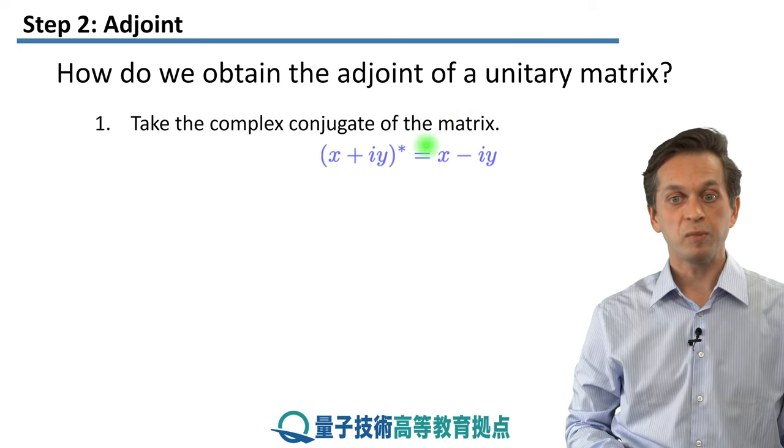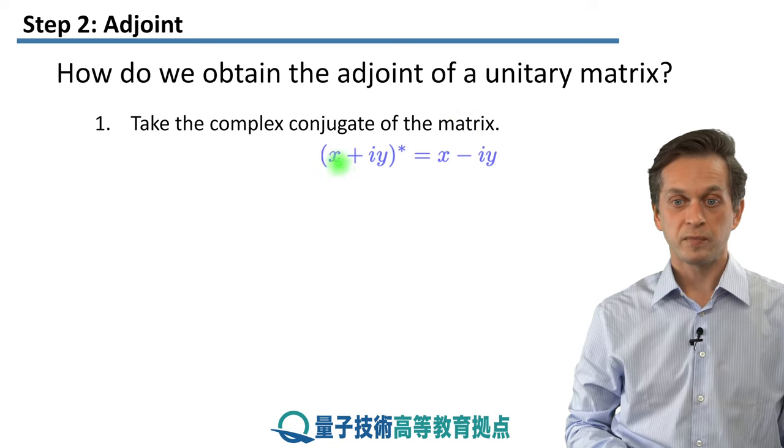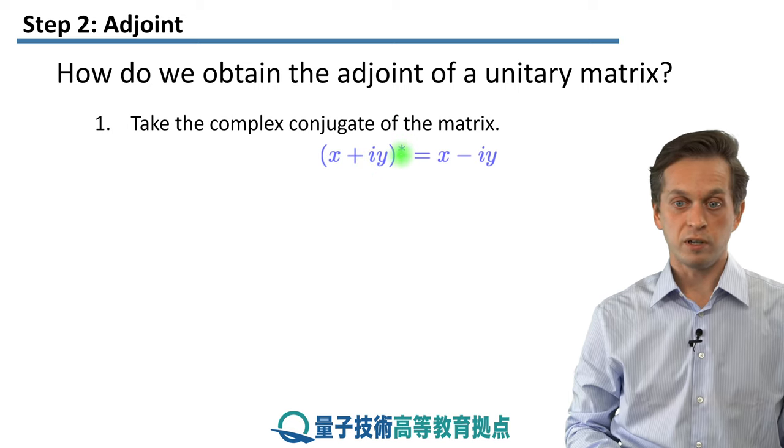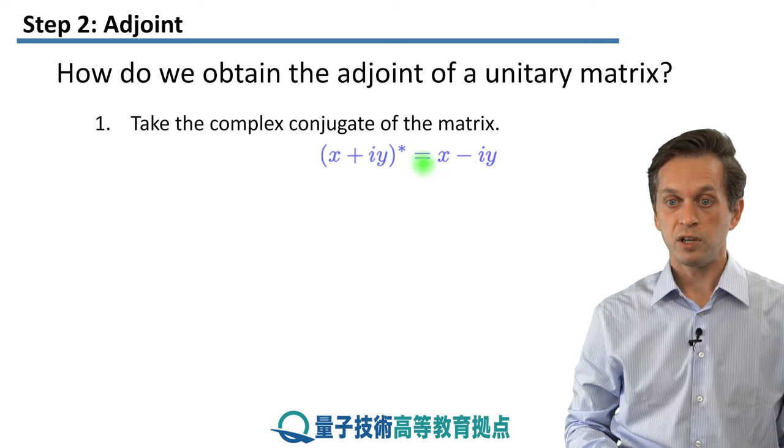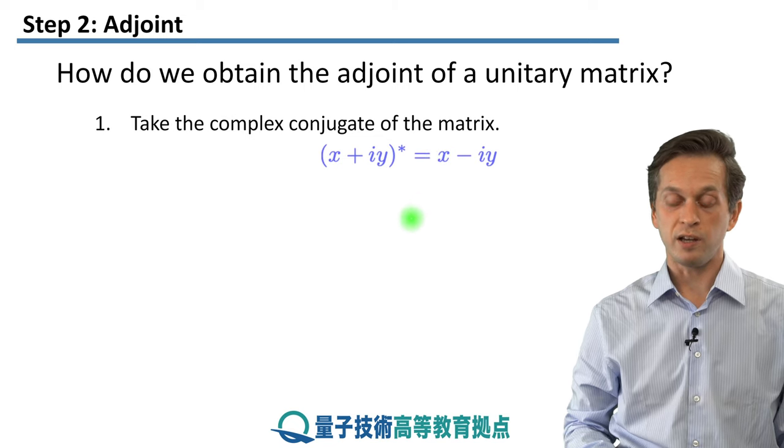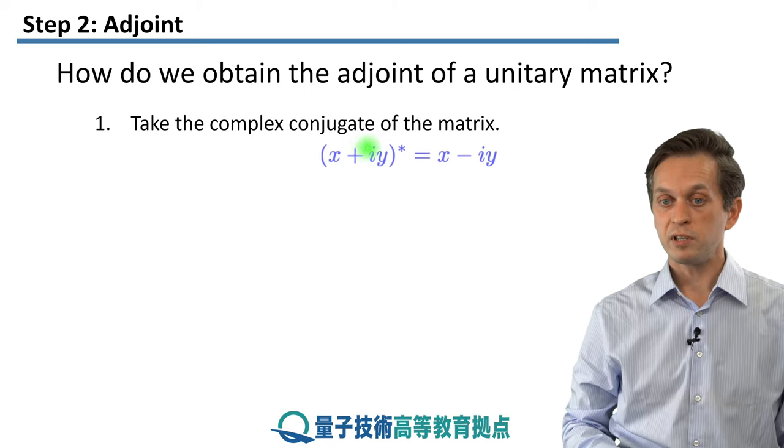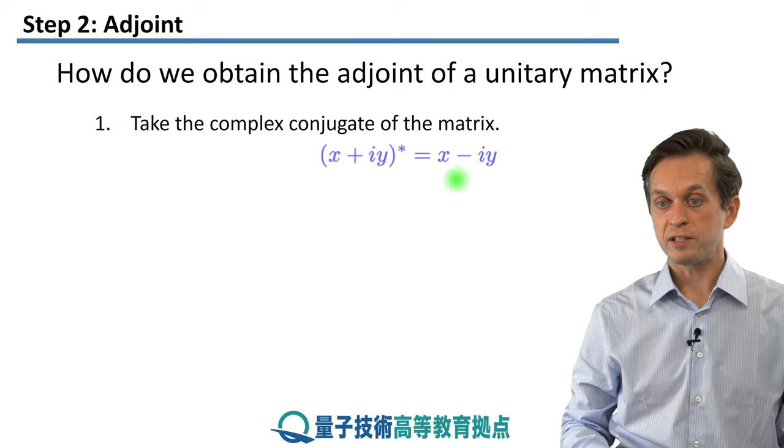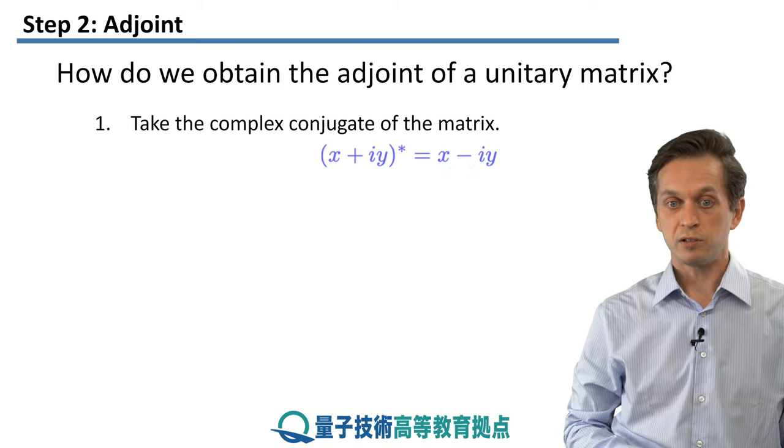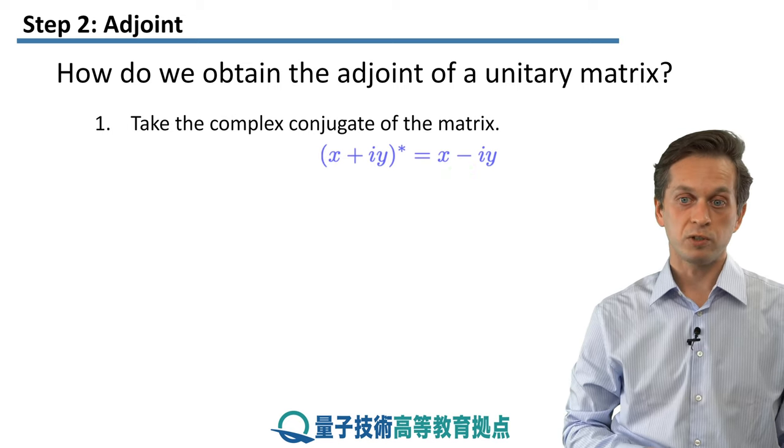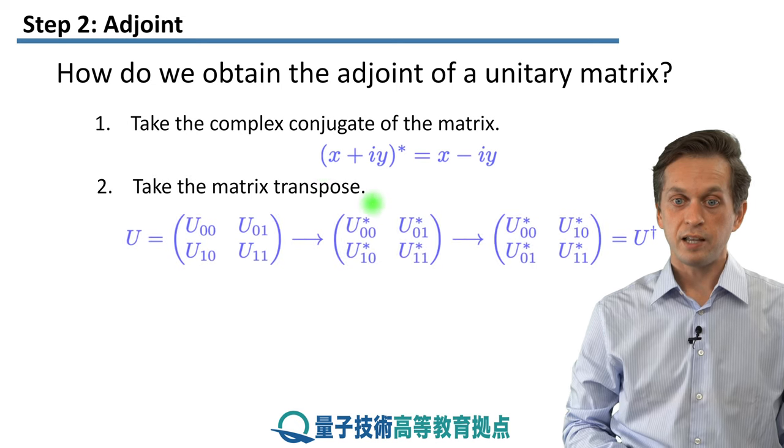Just to remind you, the complex conjugate of a complex number, (x + iy)*, which is the notation for complex conjugation, is equal to x - iy. So wherever you see i, you just flip its sign, and that's your complex conjugate. So that's step number one. First, take the complex conjugate of the matrix, and then take the transpose.